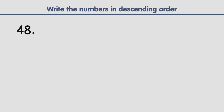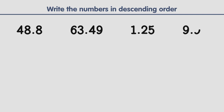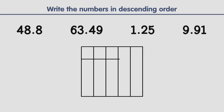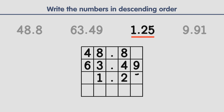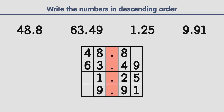Write the following numbers in descending order. Descending order means writing the numbers from highest to lowest. The first step is to create a table and put each number on it. It's very important that the decimal points are aligned. The second step is to fill in the empty spaces with zeros.